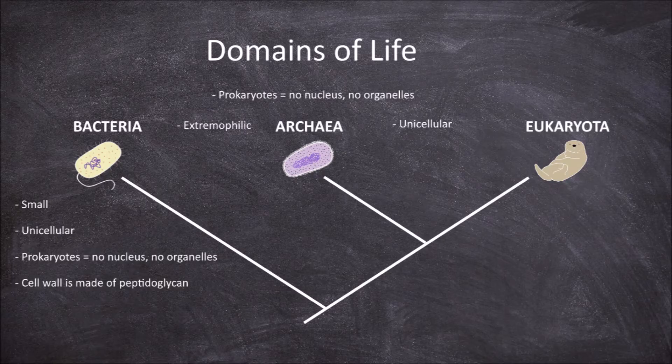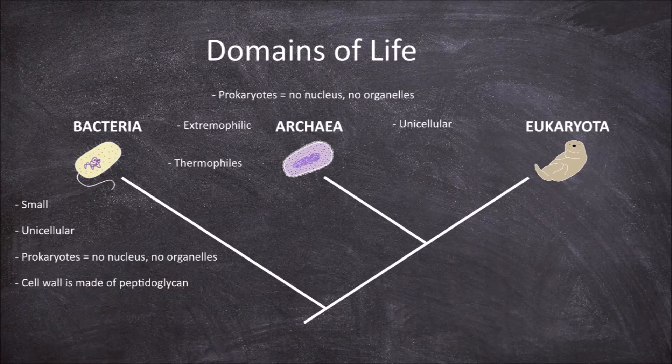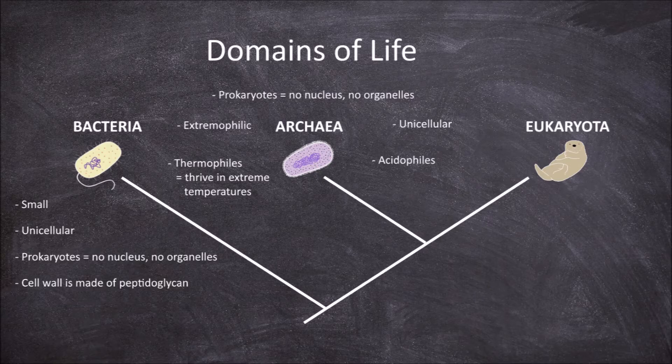Extremophilic organisms are those which thrive in extreme environments. One type of extremophile are the thermophiles, which have optimal growth at extreme temperatures. Another example are the acidophiles, which thrive in highly acidic environments.